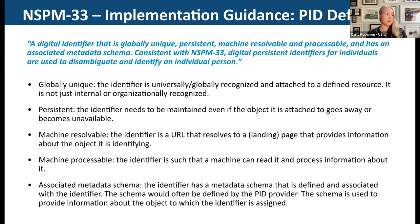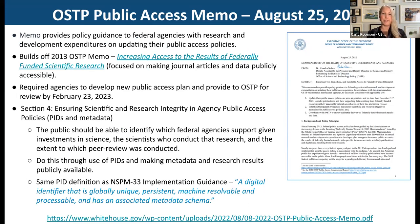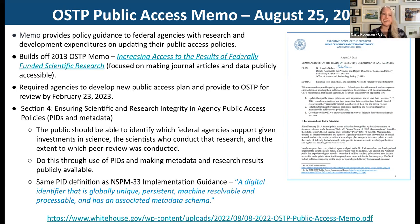Switching from NSPM-33 to the 2022 OSTP public access memo, which came out in August of last year. This memo built on the 2013 memo on increasing access to federally funded research — focused on making journal articles and data more publicly available. The new memo went beyond that, also addressing scientific and research integrity, noting that persistent identifiers and metadata can help ensure that. The memo ties to NSPM-33 in several places, including sharing the same definition for persistent identifier.